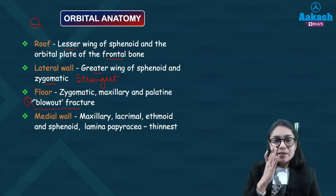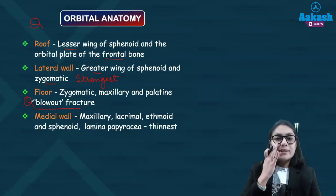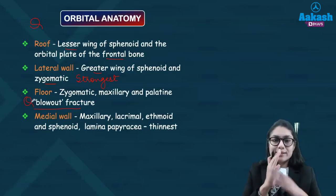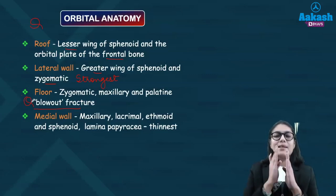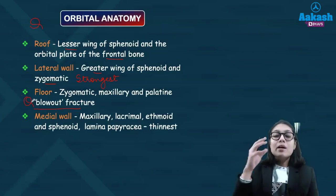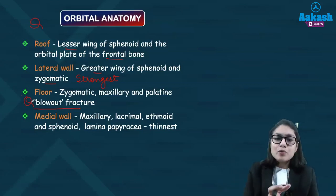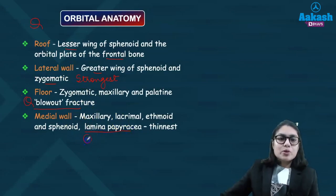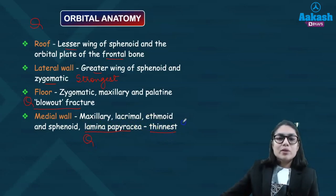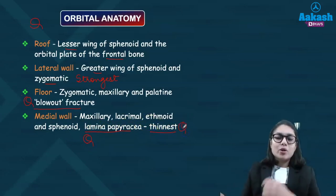Now coming onto the medial wall. The medial wall is basically formed by the lacrimal process of the maxillary bone, the lacrimal bone, then ethmoid, and then sphenoid — so there are four bones forming your medial wall. Although there are four bones involved, it is the thinnest of all the four walls and hence it is known as lamina papyracea. So the strongest wall is your lateral wall and the thinnest is your medial wall.